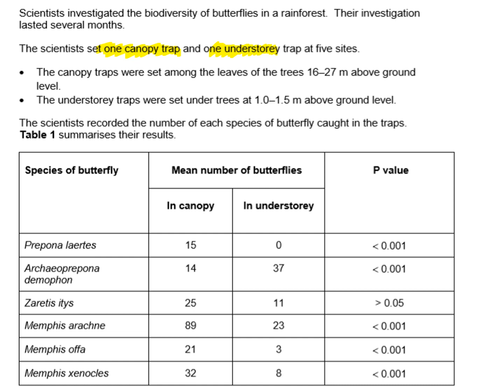They had five different sites, counting the numbers of butterfly species in both the canopy and understory traps to work out a mean for each species. The canopy traps were set among the leaves of trees 16 to 27 meters above the ground, so there is an 11 meter difference between the lowest and highest canopy traps across the five sites.